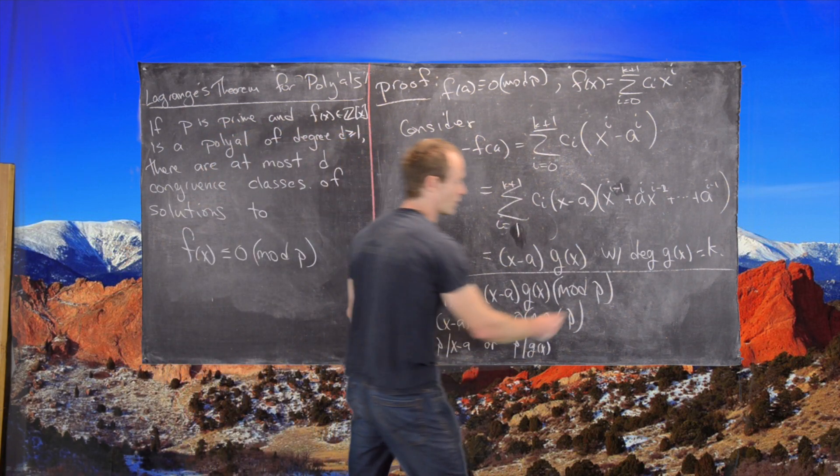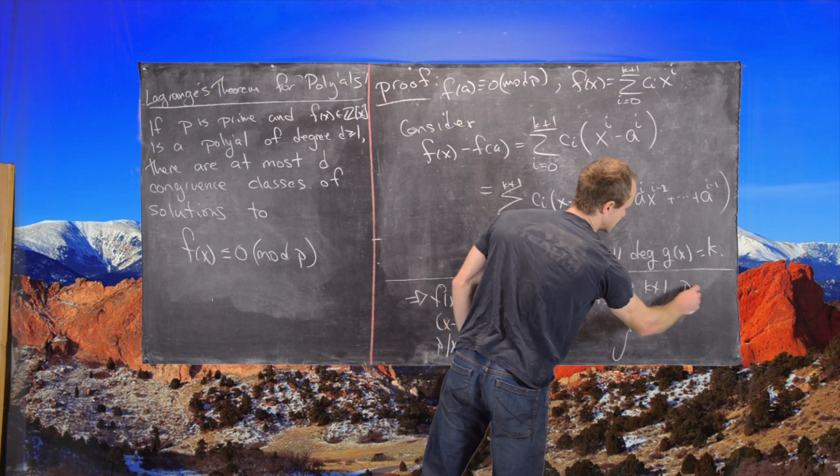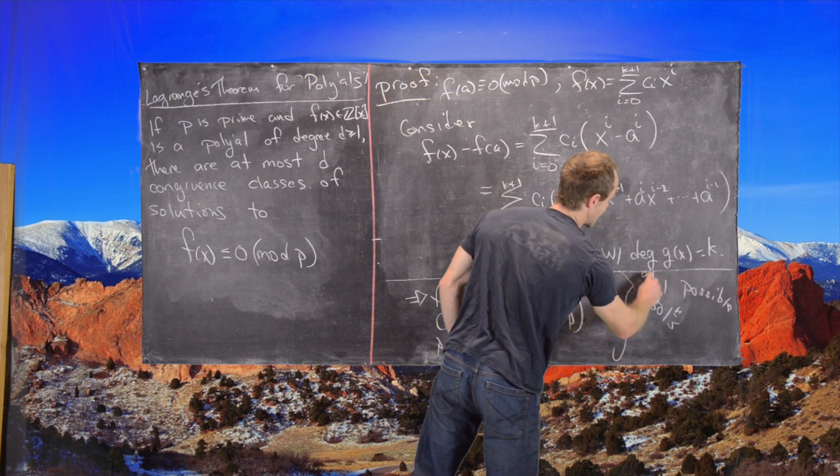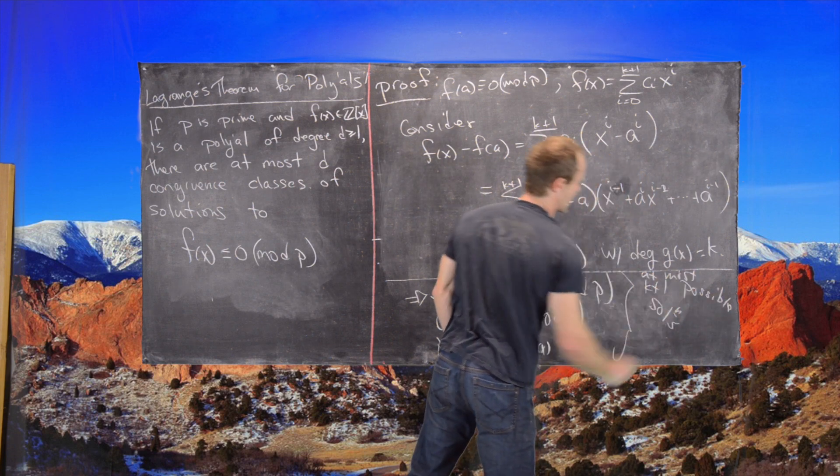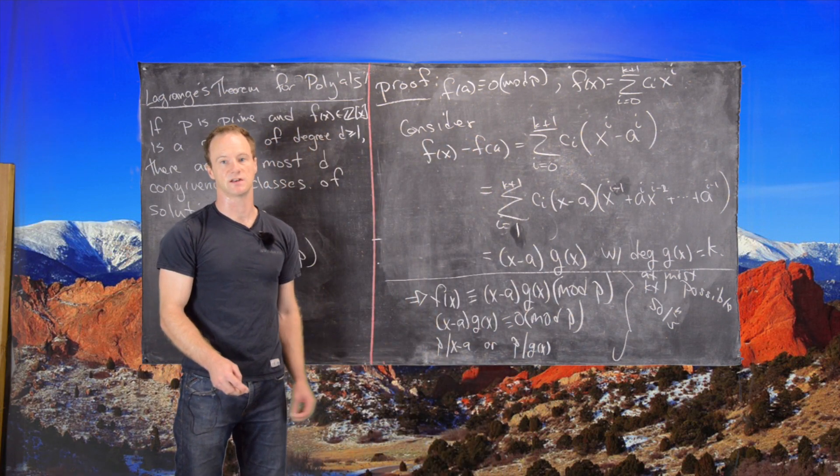So putting all that together, there are at most K plus 1 possible solutions. That's the end of the proof.